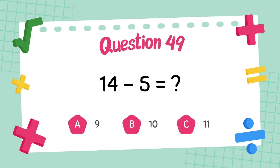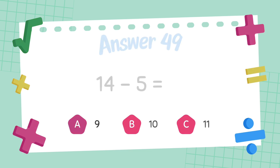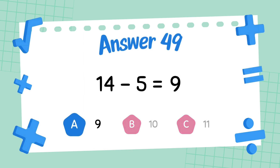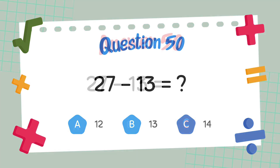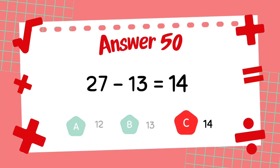What is 14 minus 5? The answer is 9. What is 27 minus 13? The answer is 14.